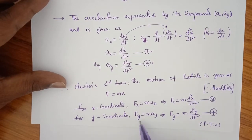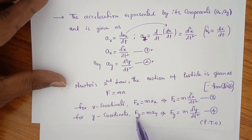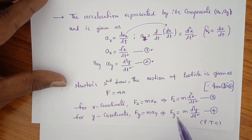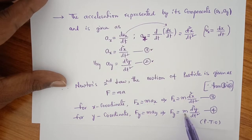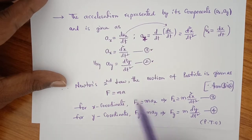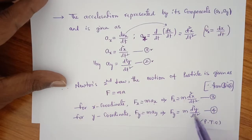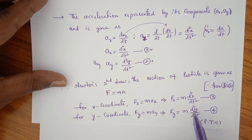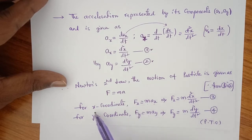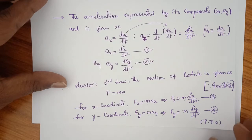For the Y coordinate: FY equals M times AY, that is FY equals M times d²Y/dt². These are the equations for the X and Y coordinates.